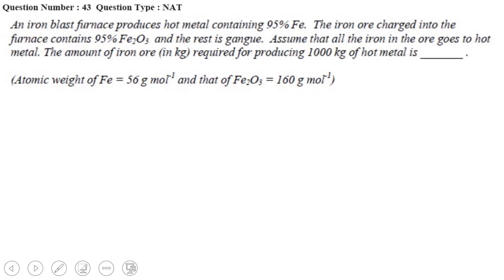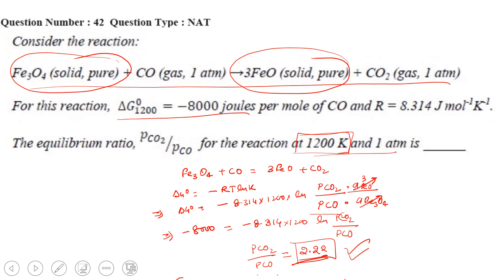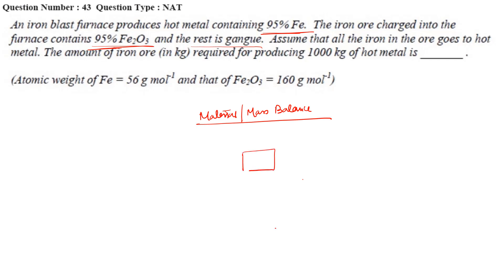An iron blast furnace produces hot metal containing 95% iron. The iron ore charged into the furnace contains 95% Fe2O3 and the rest is gangue. Assume that all the iron in the ore goes to hot metal. The amount of iron ore in kg required for producing 1000 kg of hot metal is to be found. This is a mass balance problem.